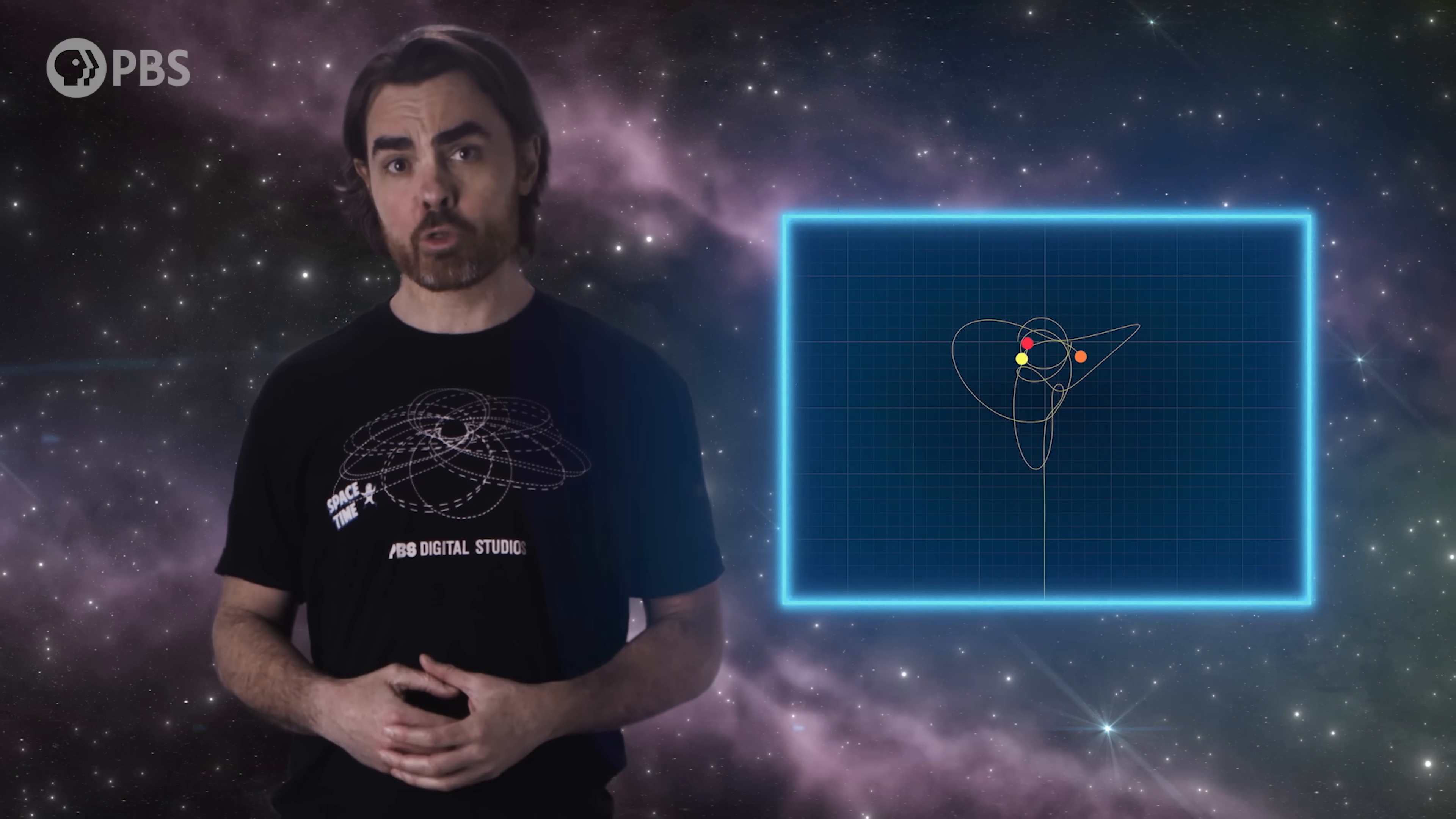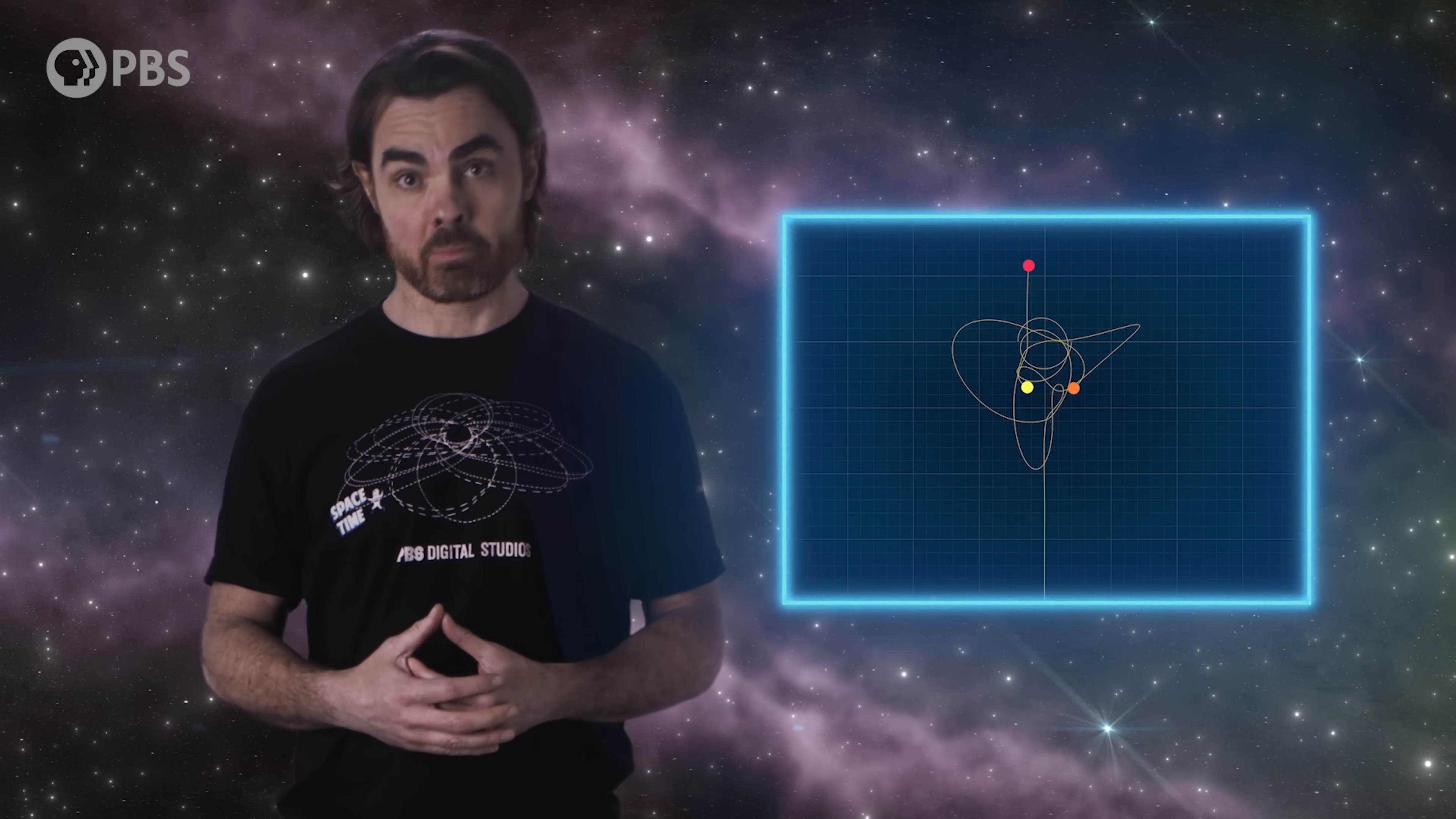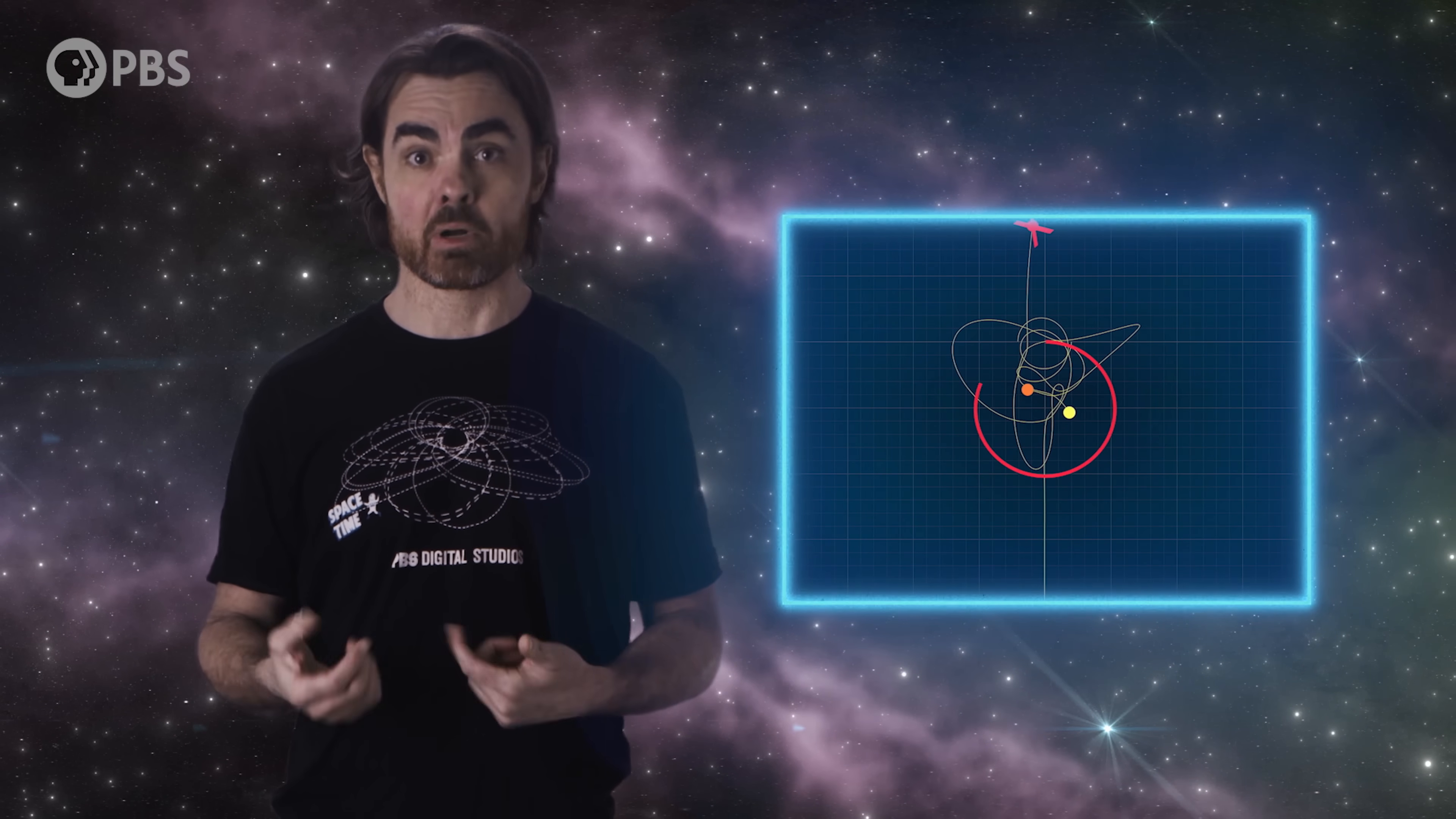How is this useful? Well actually almost all 3-body systems eject one of the bodies, leaving a nice stable 2-body system, a binary pair. Stone and Lee found that they could identify the regions of phase space where these ejections were likely, and by doing so they could map the range of likely orbital properties for the two objects left behind after the ejection.